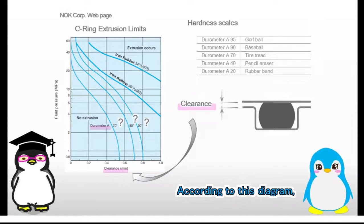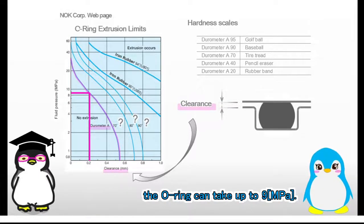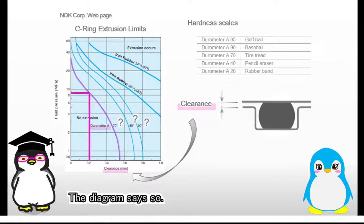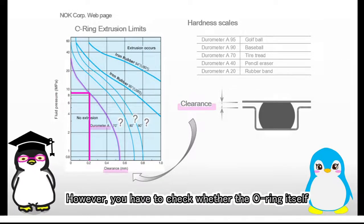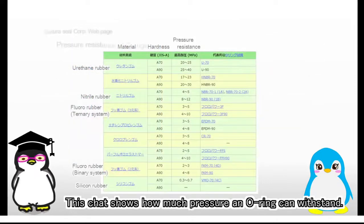According to this diagram, if the hardness of an O-ring is 70, and the clearance is 0.2 mm, the O-ring can take up to 9 MPa. Am I correct? The diagram says so. However, you have to check whether the O-ring itself can withstand 9 MPa or not. This chart shows how much pressure an O-ring can withstand.